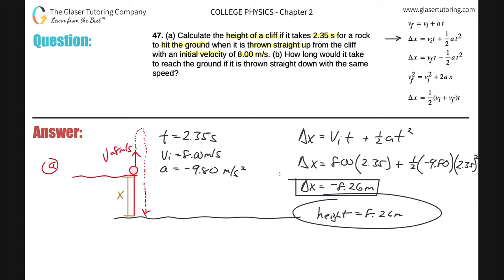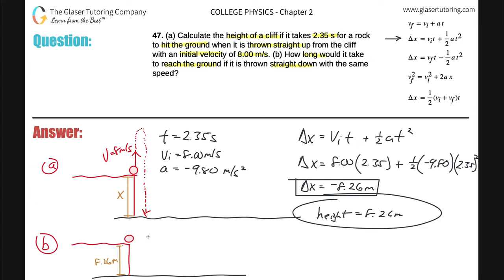That's the answer for part A — 8.26 meters is the height of the cliff. Now let's look at letter B: how long would it take to reach the ground if the ball is thrown straight down with the same speed? It's essentially the same setup with one tweak. We have the same cliff, the height is 8.26 meters, but now the ball is thrown straight down.